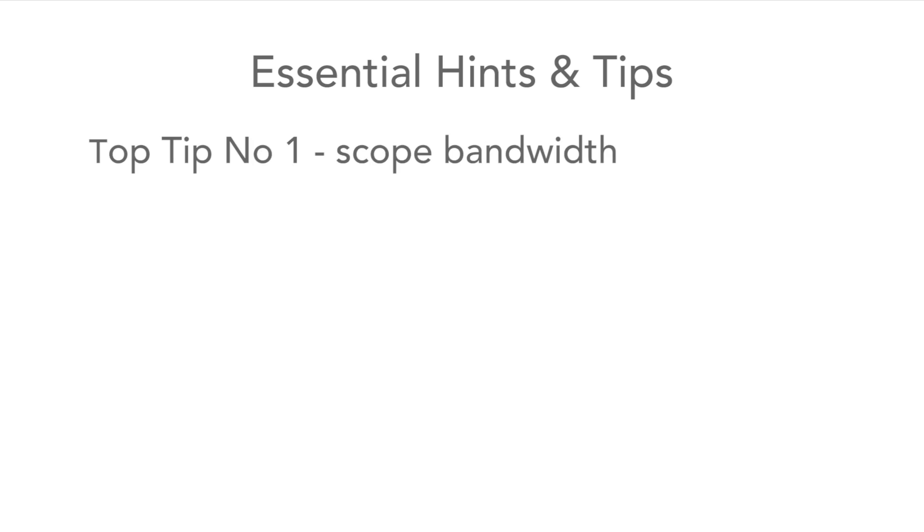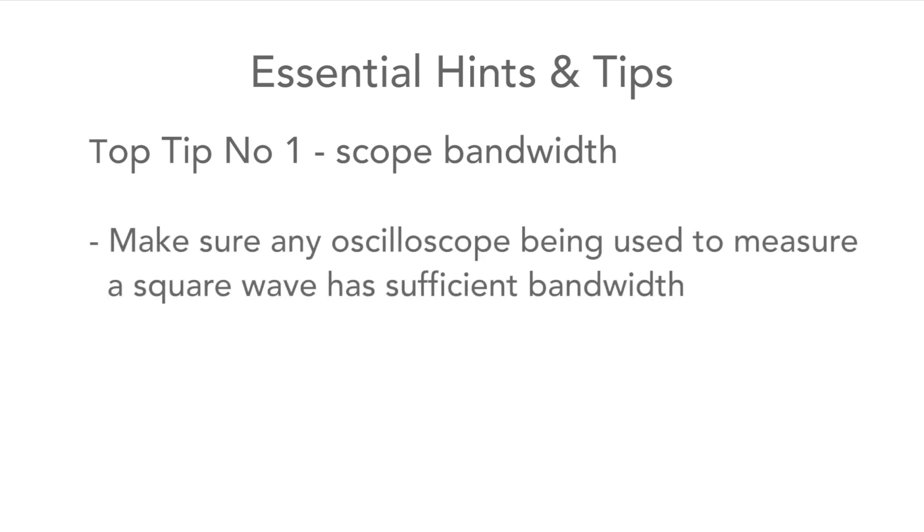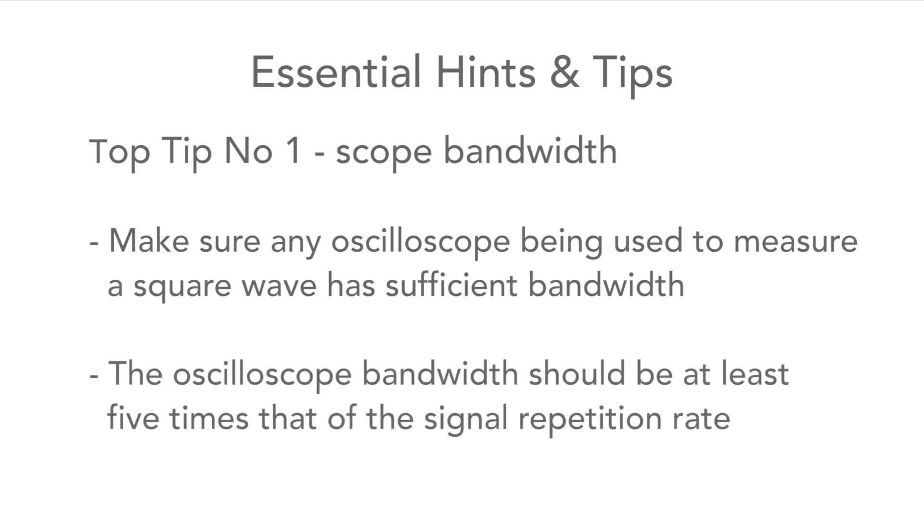Now let's look at some essential tips when dealing with square waves. First, when measuring them on a scope, make sure that the scope has sufficient bandwidth. A rule of thumb is that the oscilloscope and its probes should have a bandwidth of at least five times the basic repetition rate of any signal being viewed.